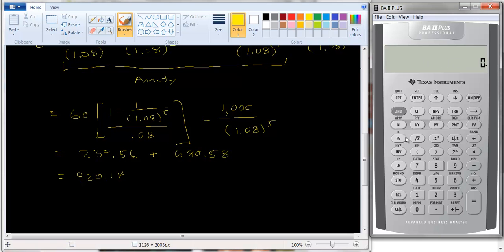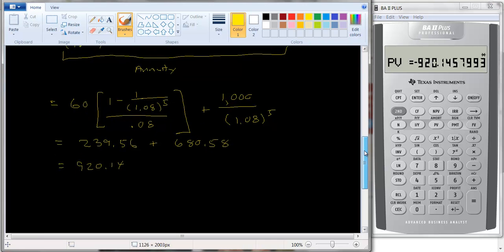We can also solve this using our financial calculator. Let me clear the time value of money workspace. We know that the bond matures in five years. We have an 8% interest rate. The coupon is $60. And the future value, or the par value, maturity value, is the future value. That's $1,000. And let's compute the present value, $920.14. So it worked perfectly.